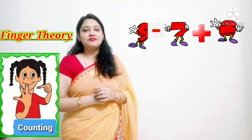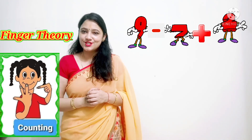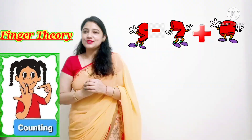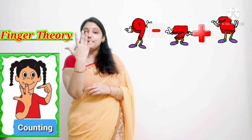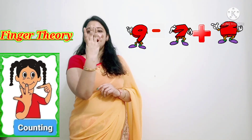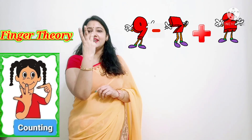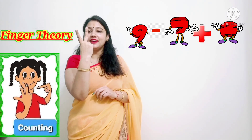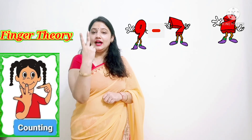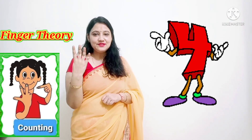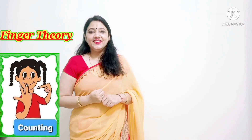Let's take one more: 9 minus 7 plus 2. Show 9. We have minus 7 — counting: 5, 6, 7. And plus 2. The answer will be 4. I hope you understood.